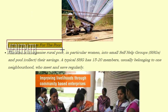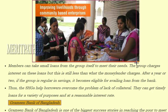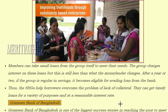Self-help groups for the poor aim to organize rural poor — in particular women — into small groups to pool their savings. A typical self-help group has 15 to 20 members, usually from one neighborhood, who meet and save regularly. Members can take small loans from the group itself to meet their needs; the group charges interest, but it is still less than what money lenders charge. After a year or two of regular savings, the group becomes eligible for a loan from a bank, helping borrowers overcome the problem of lack of collateral.